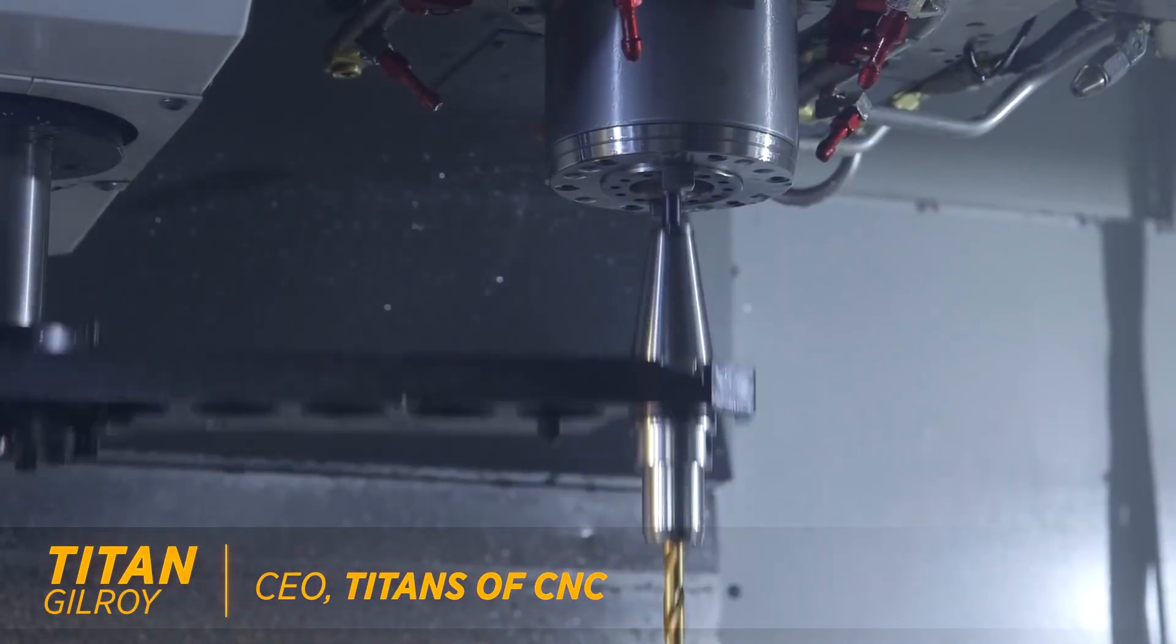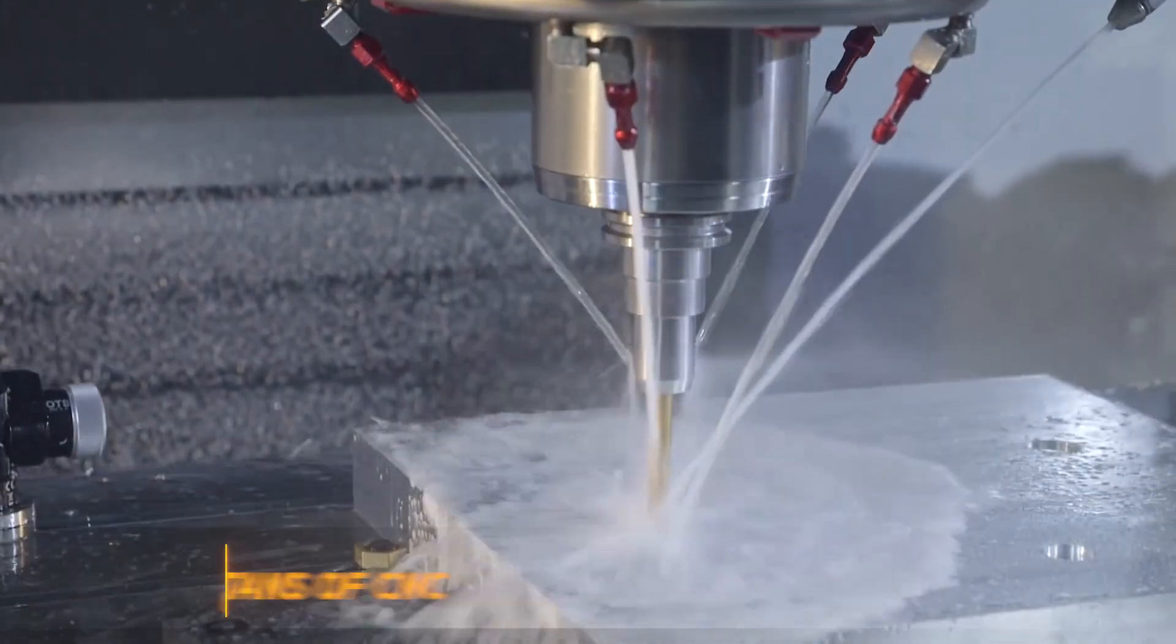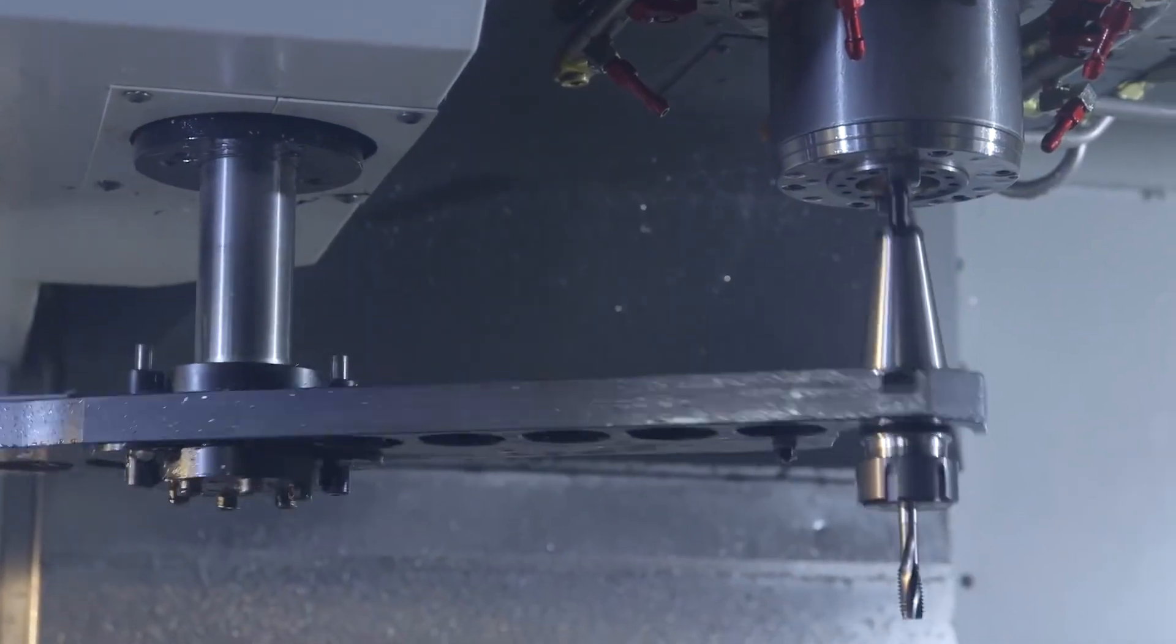So when the material comes to our shop and we inspect the material, you're going to realize it is far from being within tolerance. How do you take a flat plate and make it perfect?